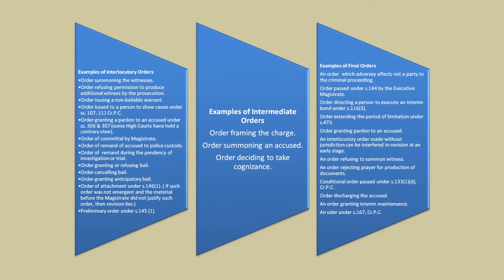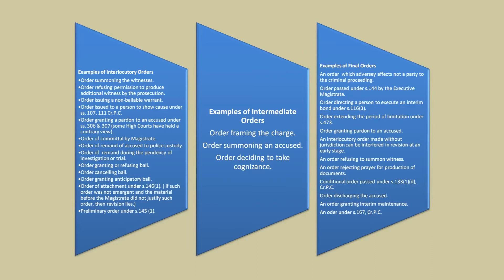Looking at the various examples: there are final orders, intermediary orders, and interlocutory orders. Interlocutory orders include acts like summoning a person, though summoning can fall into other categories depending on the rights it touches. As for intermediate orders, examples held in various decisions include: order framing of charge, order summoning an accused, and order deciding to take cognizance.